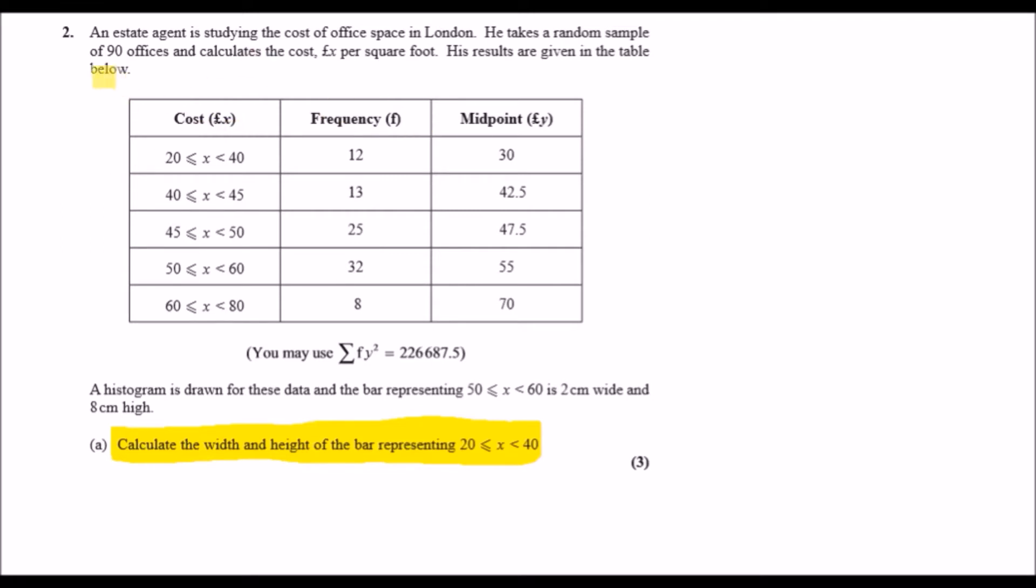So first things first, for every type of question, we should always record the end value of n. So we can say here that we have a total sample size of 90, or according to this table, a total frequency of 90. You could use both here. They're both the same.